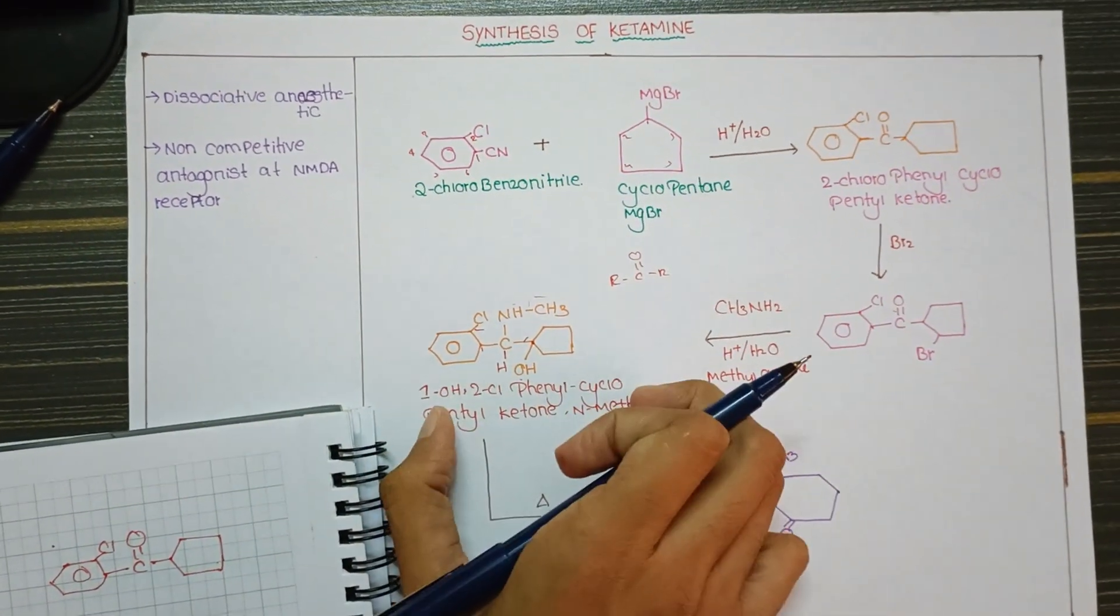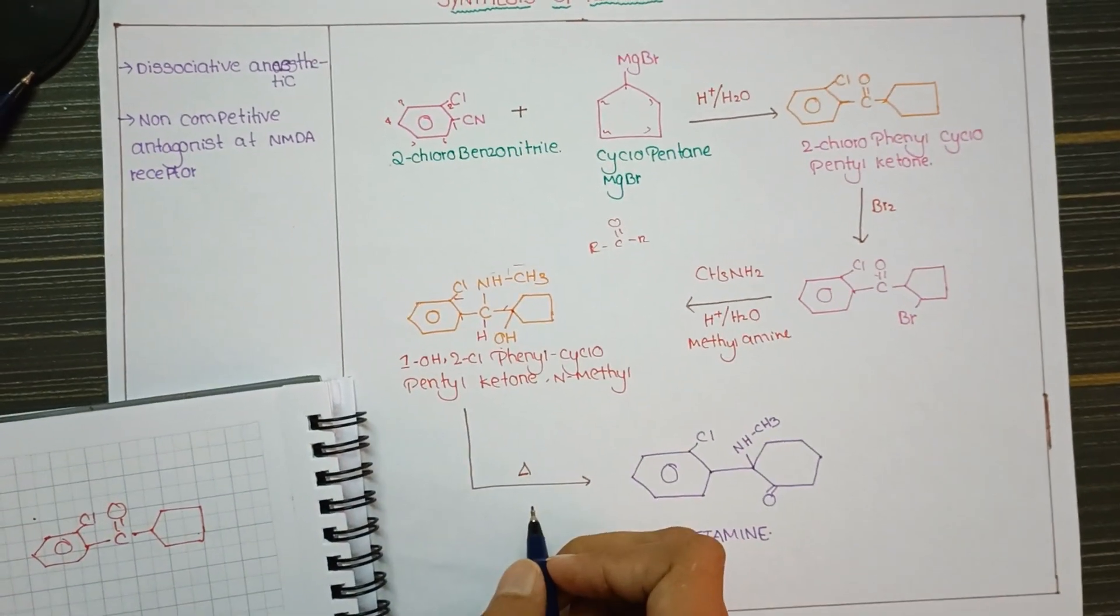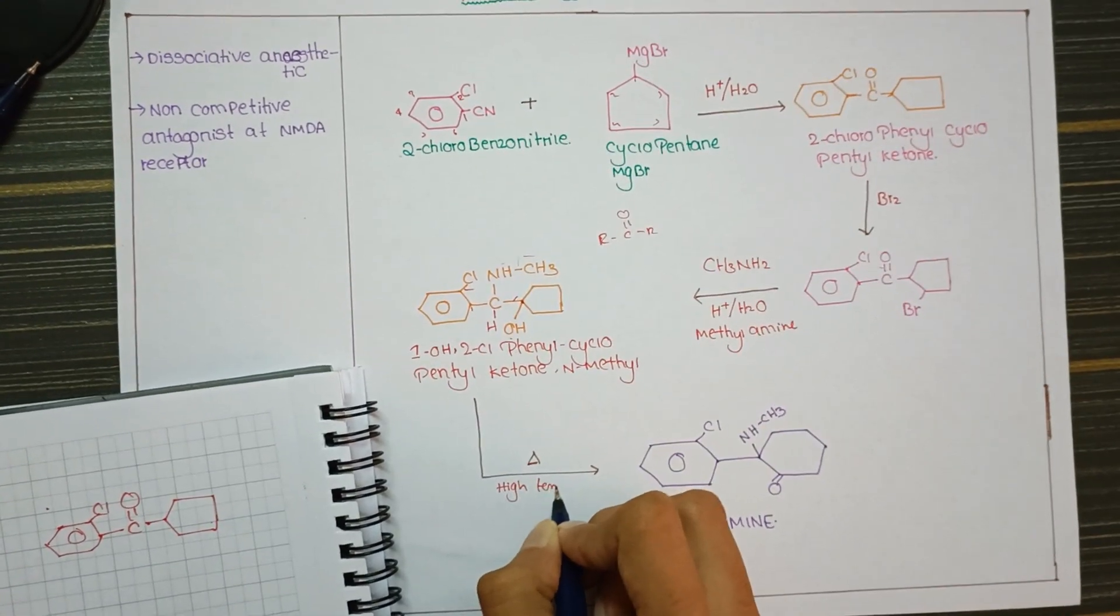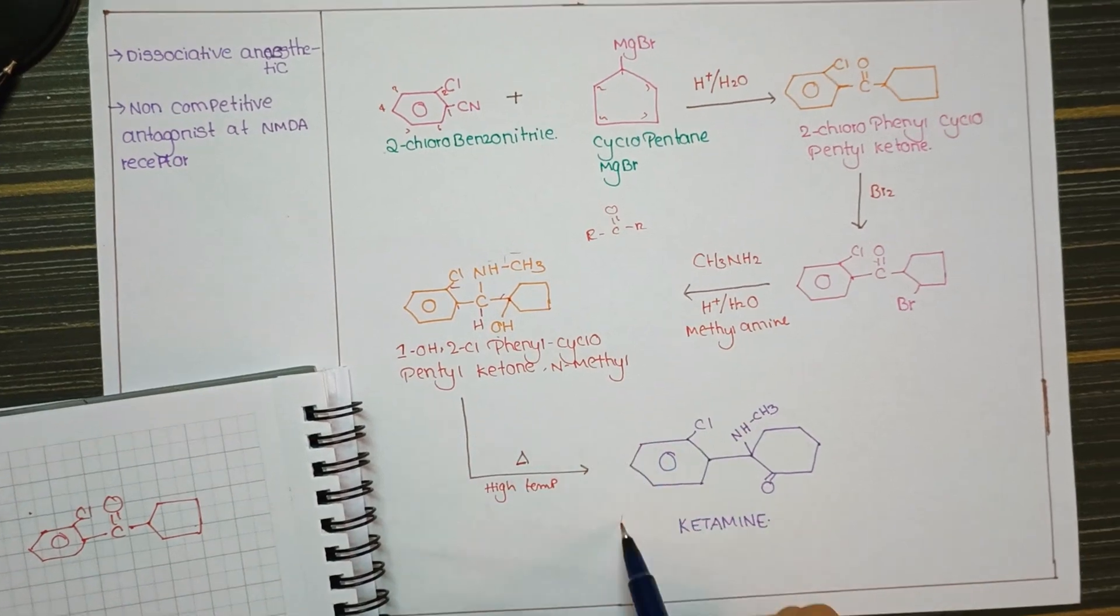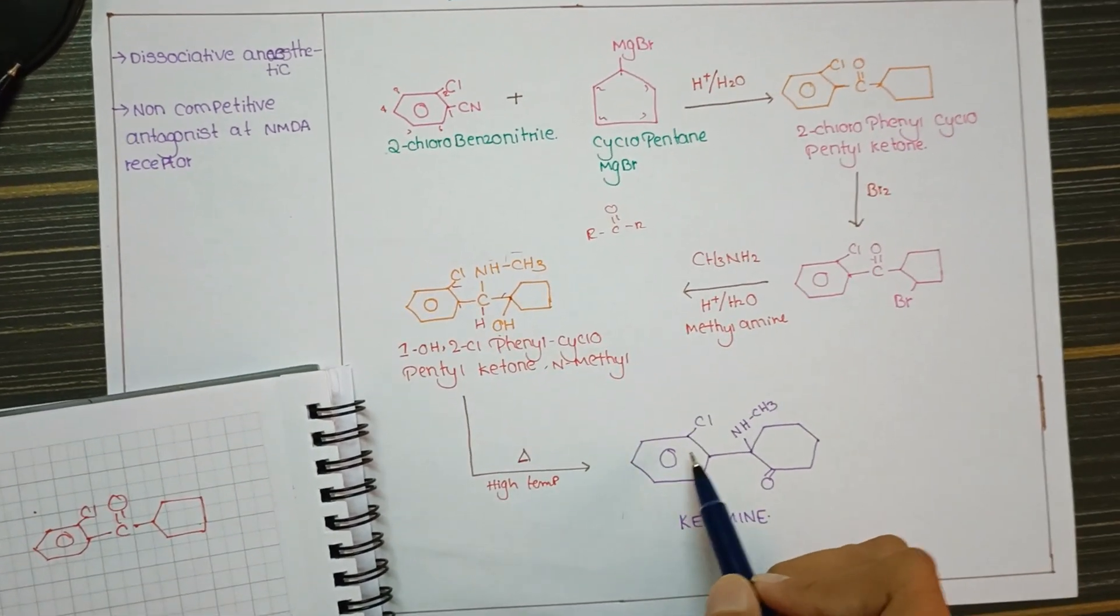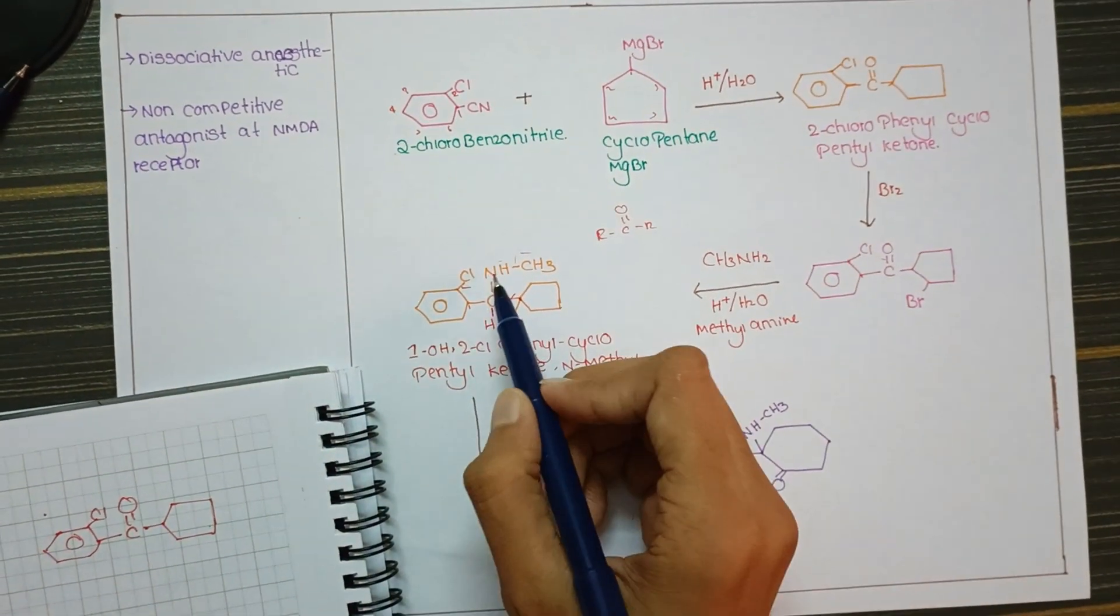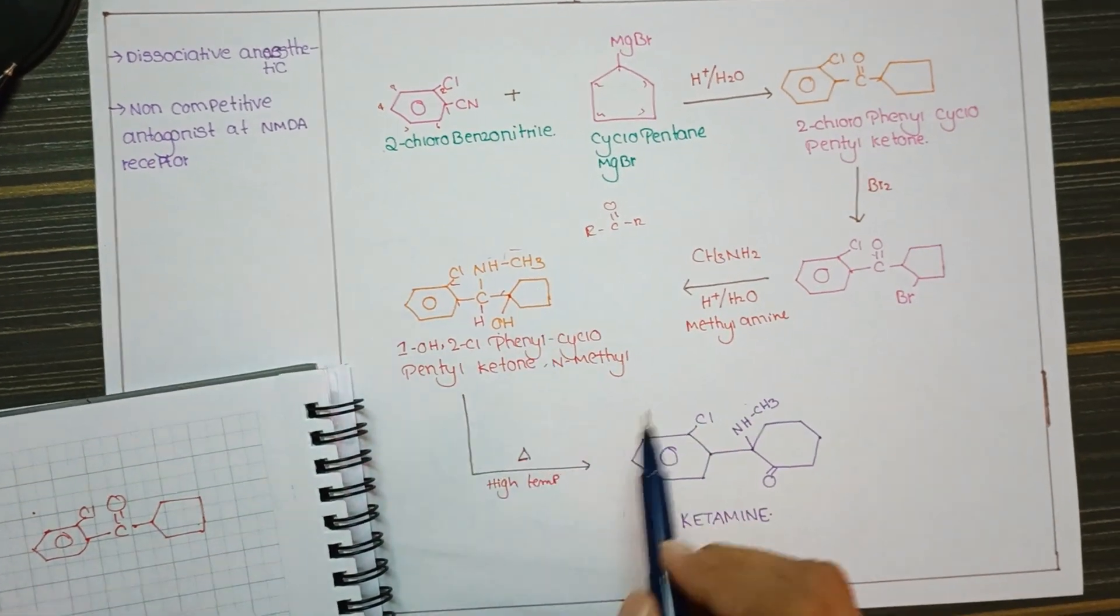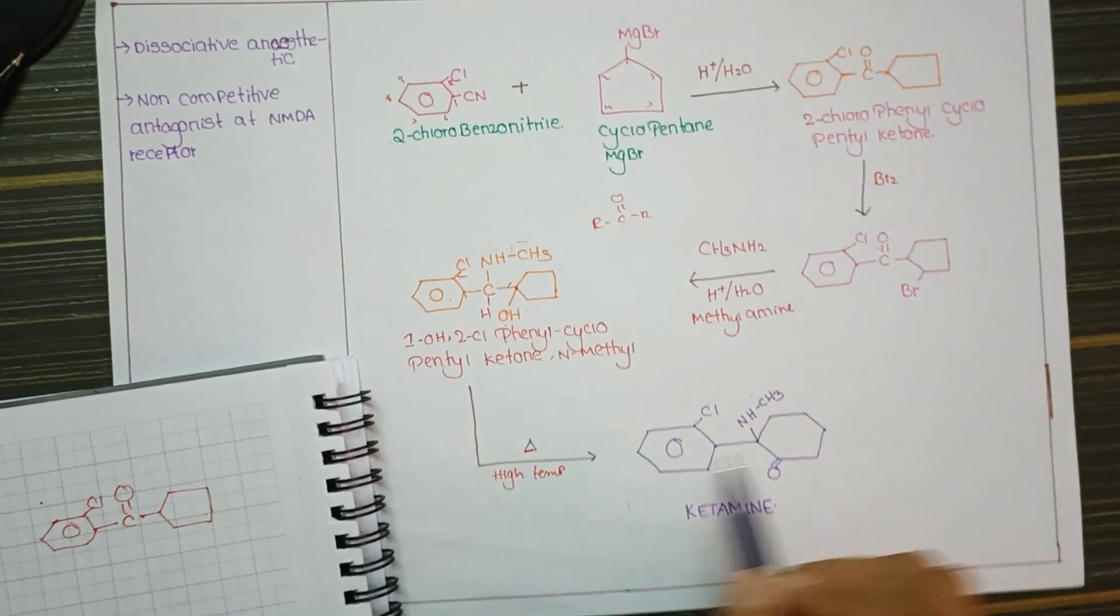When this compound is subjected to very high temperature (delta means high temperature), the resulting structure is ketamine. This nitrogen-methyl is here, and this product at high temperature forms the cyclopentane ring of ketamine.